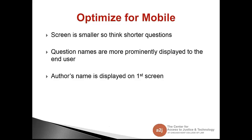The next thing to talk about is optimizing for mobile. If you think about mobile, the screen is smaller. So when you have long question text, that might be something you want to think about editing down to make sure it looks the way you'd like on mobile — maybe even breaking it up into multiple questions. Another thing with mobile: question names are more prominently displayed to the end user. Your end user can see the question name more than just in the drop-down menu. Also, your name as the author is displayed on the first screen — it says 'anonymous' if you leave that section blank in About, but if you put your name in the About section, it is displayed to the end user.